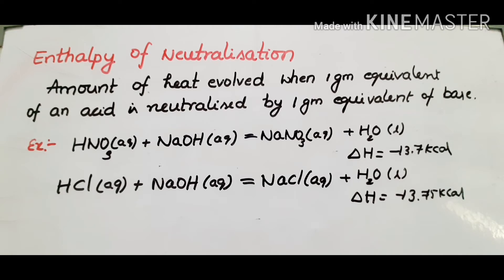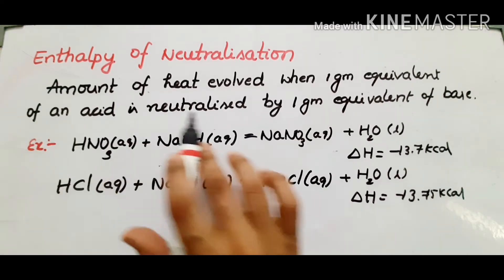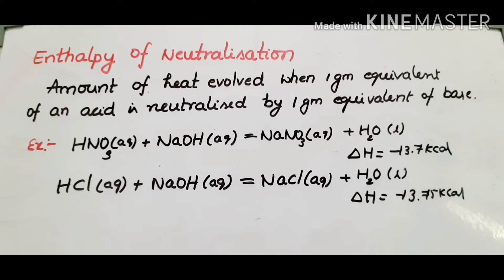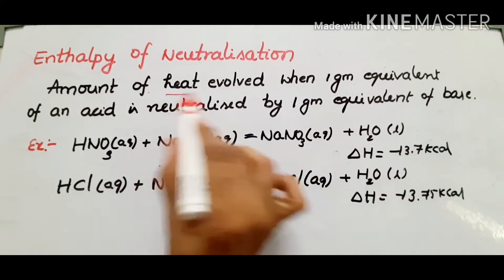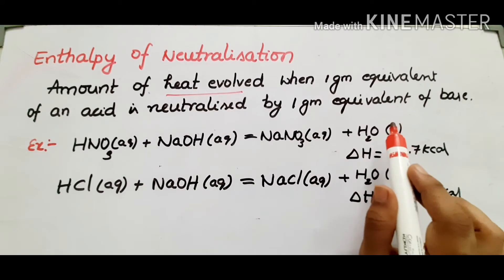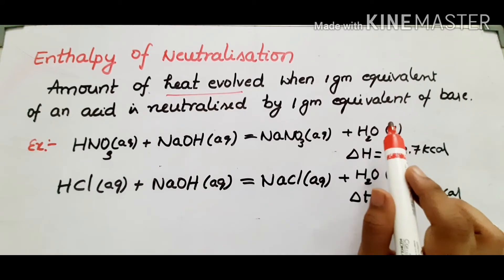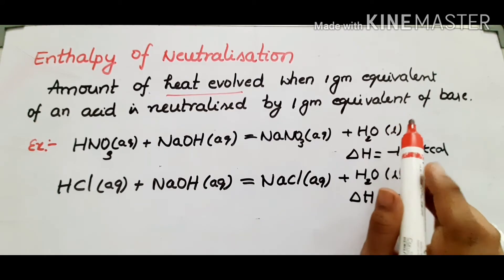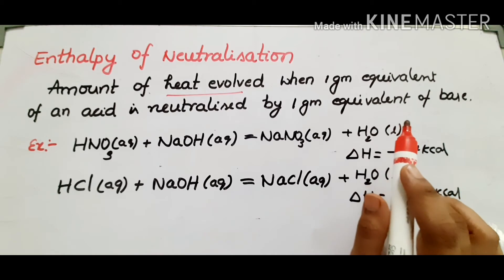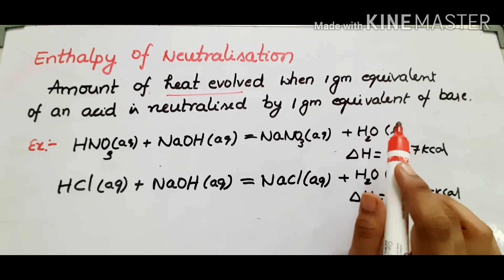What is enthalpy of neutralization? It is the amount of heat evolved when 1 gram equivalent of acid is neutralized by 1 gram equivalent of base. That means 1 gram equivalent acid and 1 gram equivalent base neutralize and evolve heat.